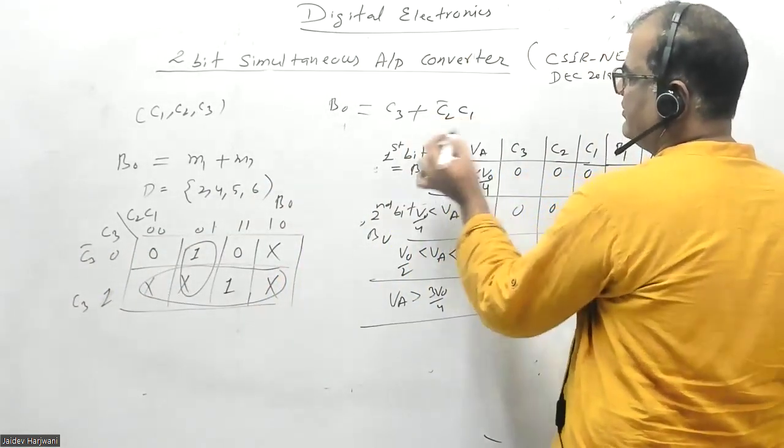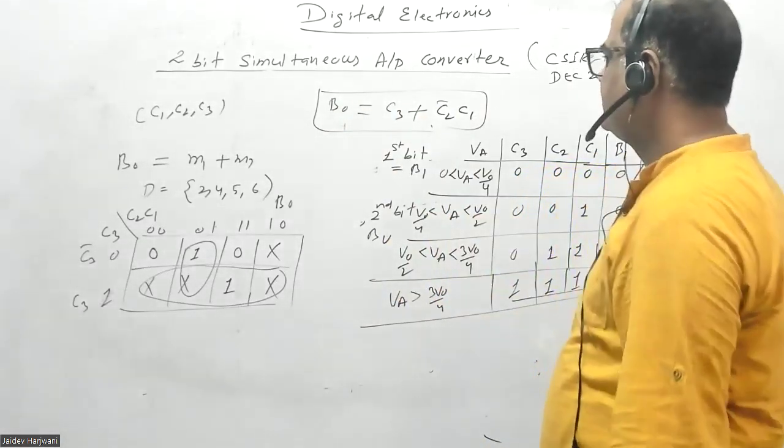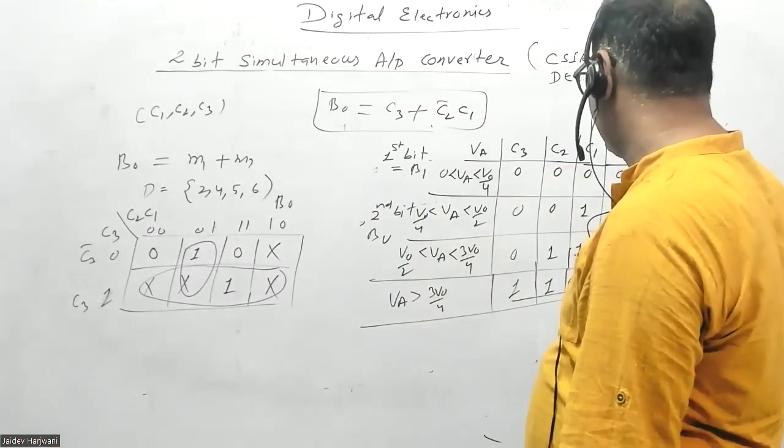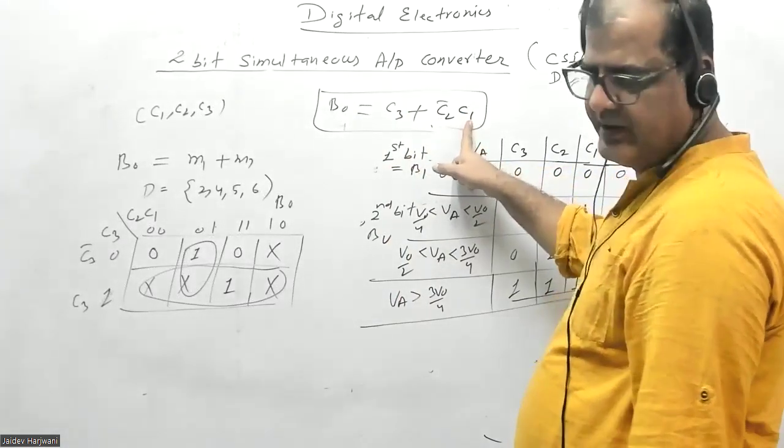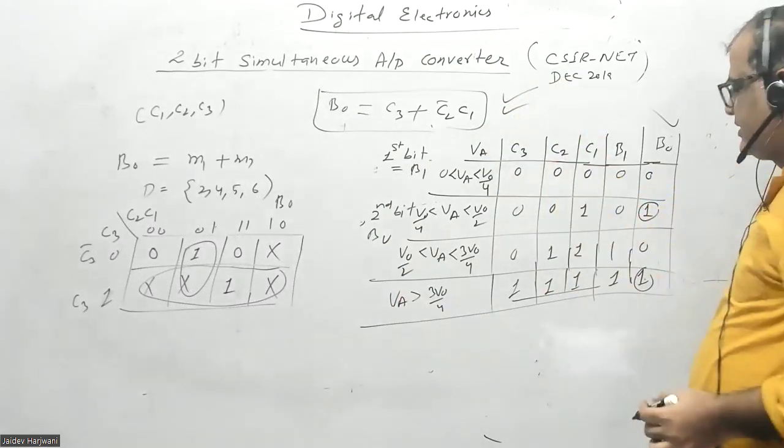C3 changes 0 to 1, so we get C2 bar and C1. This is the correct option: C3 bar equals C2 bar AND C1. If you put 001, you get m1 implemented. This is the correct answer for the given question.